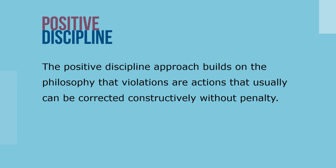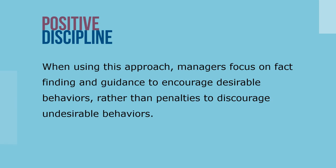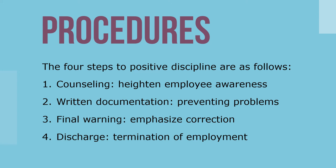The positive discipline approach builds on the philosophy that violations are actions that usually can be corrected constructively without penalty. Managers focus on fact-finding and guidance to encourage desirable behaviors rather than penalties to discourage undesirable behaviors. The four steps to positive discipline are: first, counseling — to heighten employee awareness of organization policies and rules; second, written documentation — solutions are identified in written form to prevent further problems; third, a final warning — the supervisor emphasizes the importance of correcting the inappropriate action; and fourth, discharge — if the employee fails to follow the action plan and problems continue, the supervisor can discharge the employee.